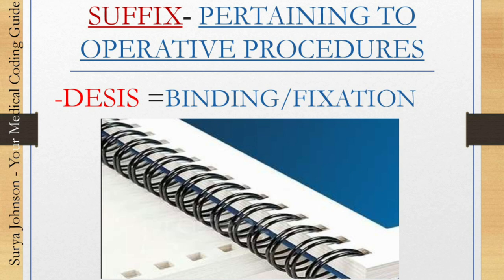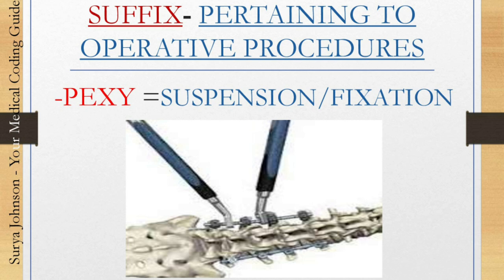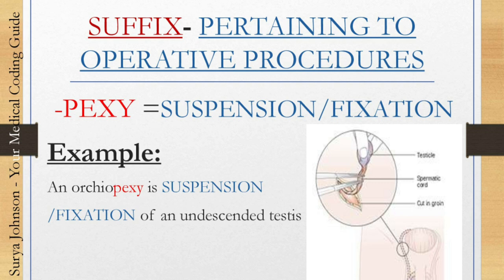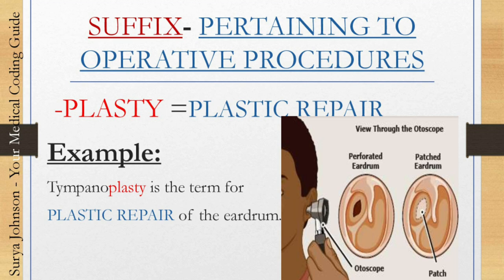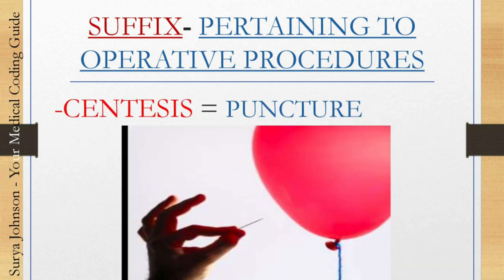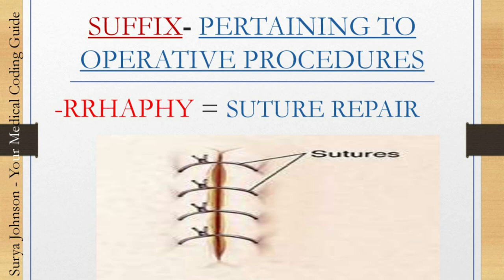The next one, '-desis,' means binding or fixation. For example, arthrodesis is surgical binding or fixation of a joint. The next one, '-pexy,' means suspension or fixation. For example, orchiopexy is suspension or fixation of an undescended testis. The next one, '-plasty,' means plastic repair. For example, tympanoplasty is the plastic repair of the eardrum. The next one, '-centesis,' means puncture. For example, arthrocentesis means puncture of a joint for removal of fluid. The next one, '-rrhaphy,' means suture repair.